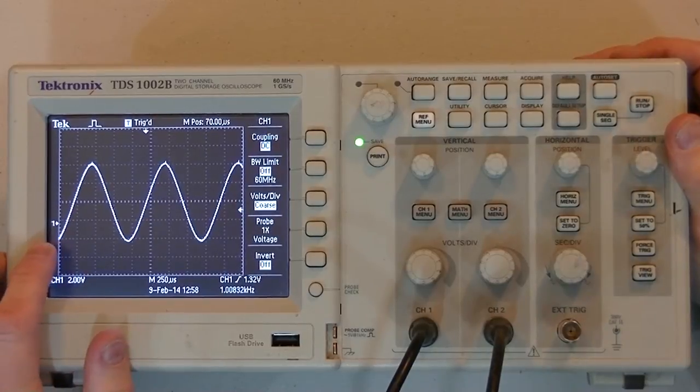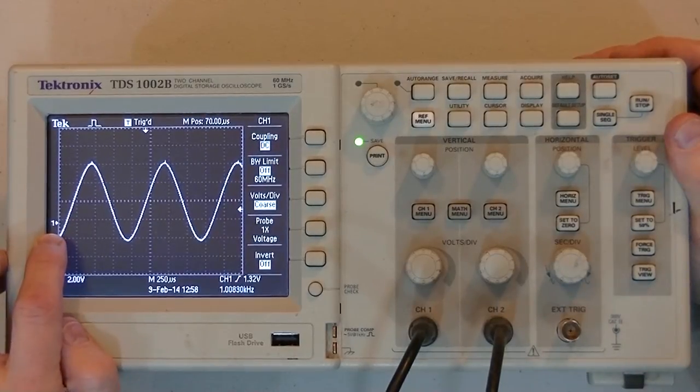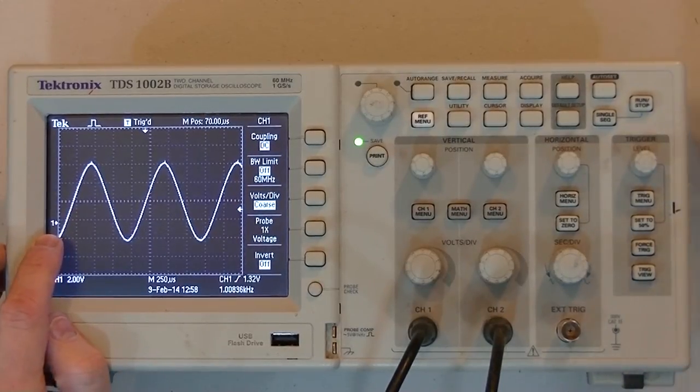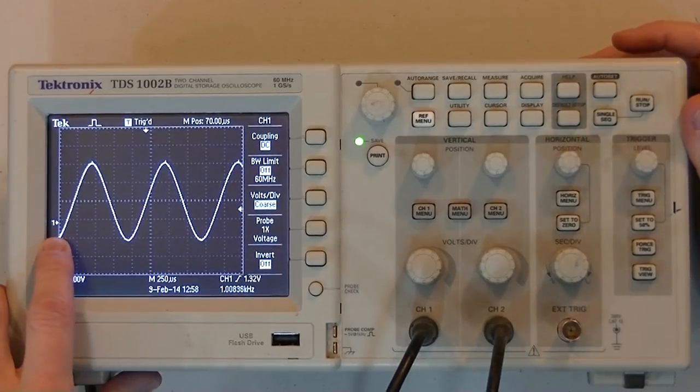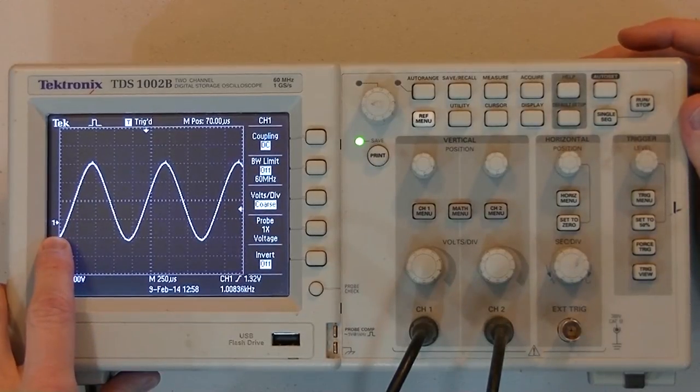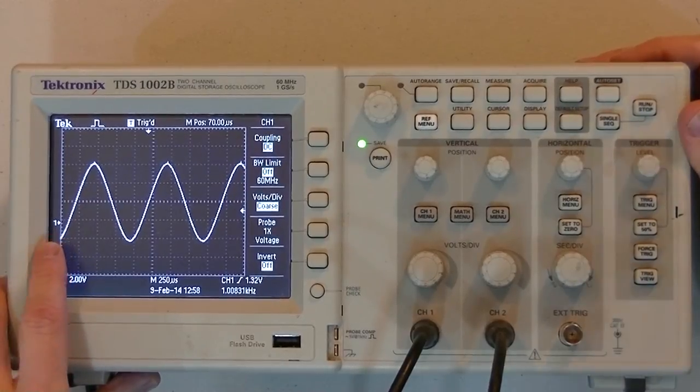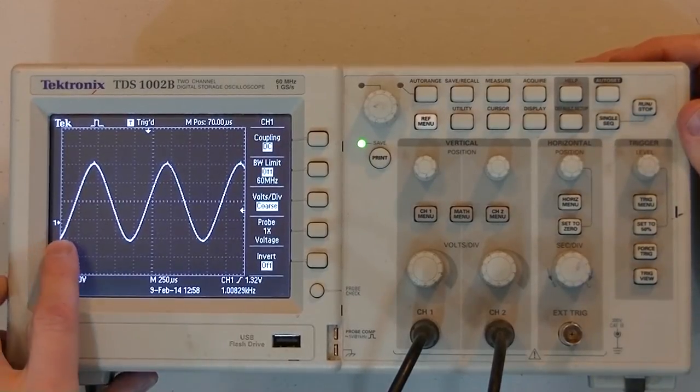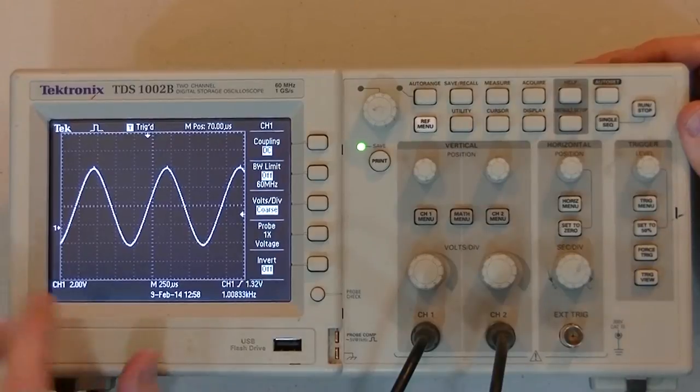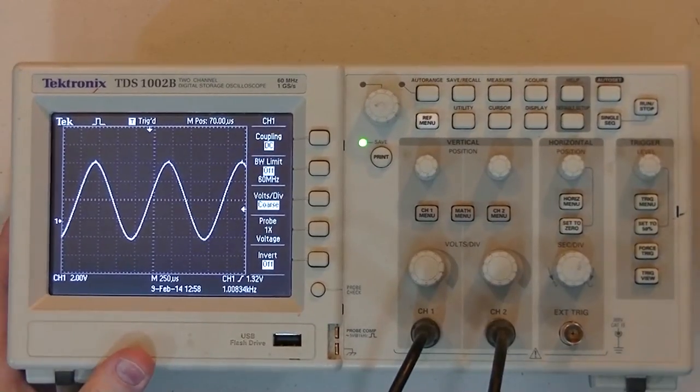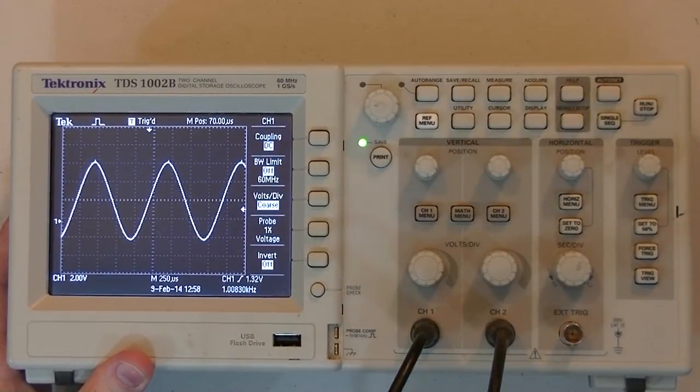Some oscilloscopes, mostly newer ones, will show you where the ground level is. So where 0 volts is. In this case, I have a little 1 over here, which I'm not sure if you can see. But it's indicating where the ground level is with a little arrow.